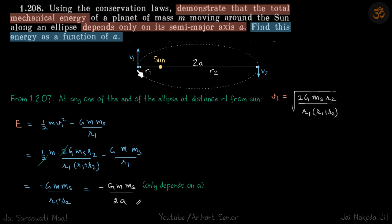So let's write the mechanical energy at this point. So it will be half mv1 squared minus GMms by r1.